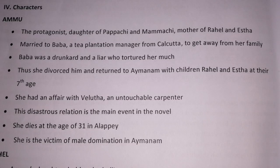Now let us go through the main characters. One of the main protagonists of this novel is Ammu — daughter of Papachi and Mamachi, mother of Rahel and Estha. She married Baba, a tea plantation manager from Calcutta, to get away from her family. Baba was a drunkard and a liar who tortured her much. Thus she divorced him and returned to Aymanam with the children Rahel and Estha at their seventh age.